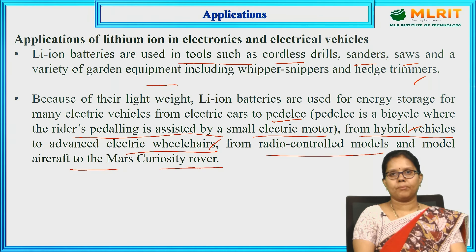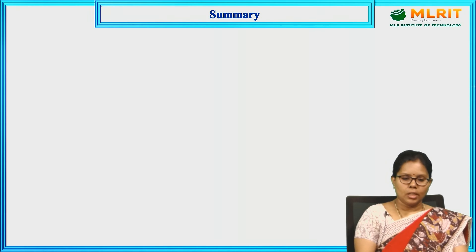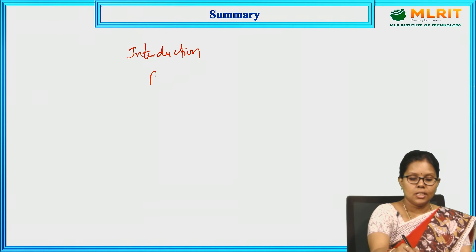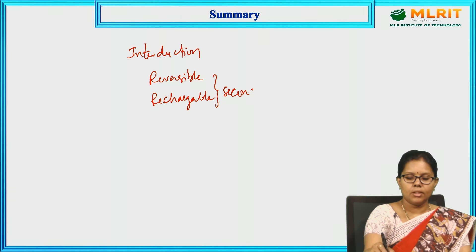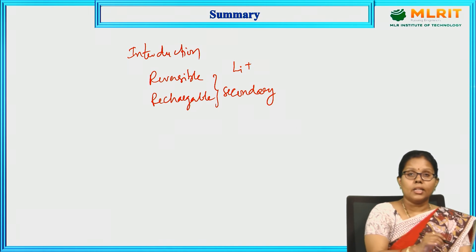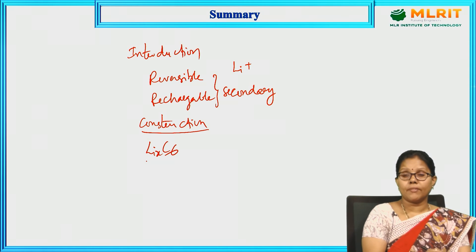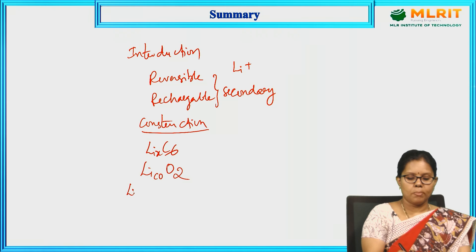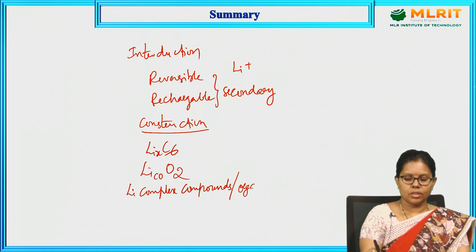In summary: lithium ion battery is a secondary battery. In today's class we discussed the introduction, how it is reversible and rechargeable. The anode is LixC6 (lithium-doped graphite), the cathode is LiCoO2 (lithium cobalt oxide), and the electrolyte is a lithium complex compound dissolved in organic solvents.